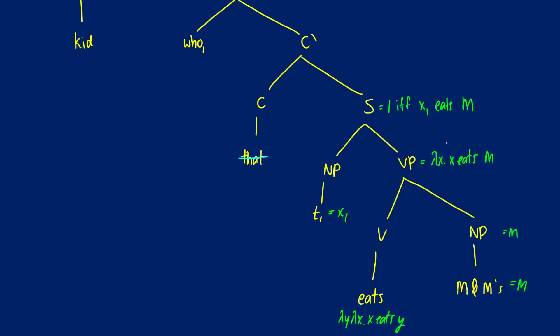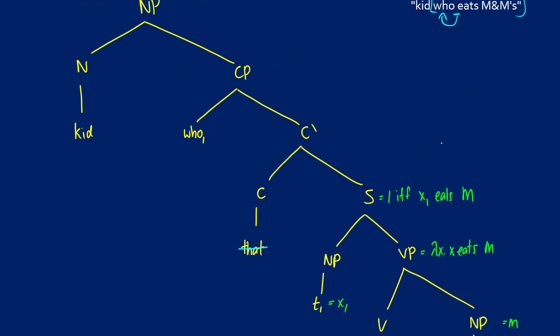Now as we go up the tree, we see our complementizer "that." Now this is just going to be lambda P dot P. So when we do our substitution, as we've seen so many times before, we're just going to get literally the same thing back. So one if and only if X1 eats M.